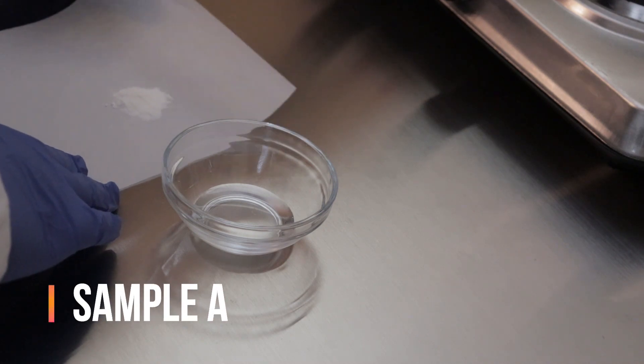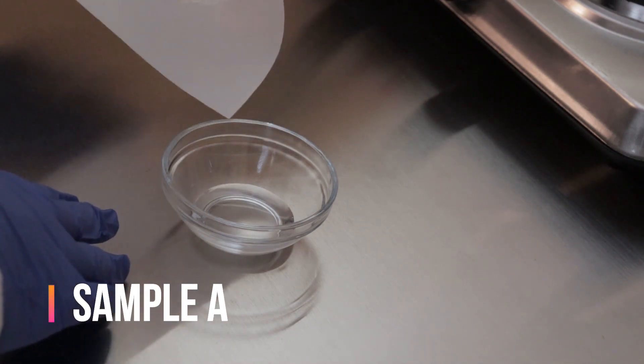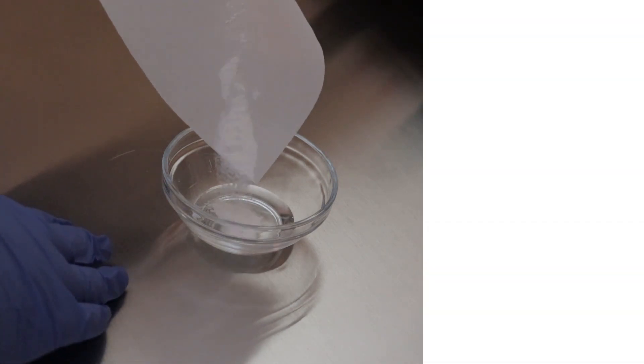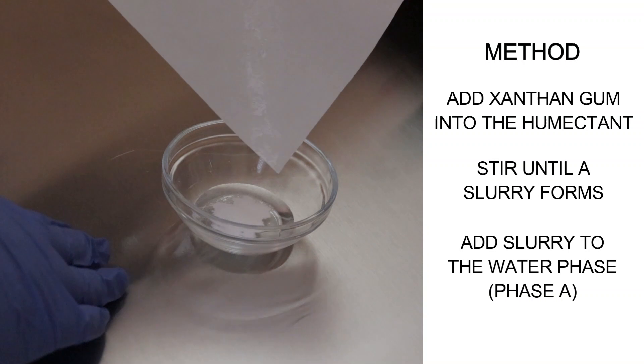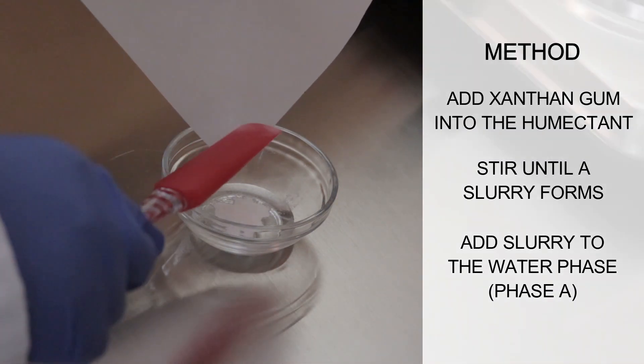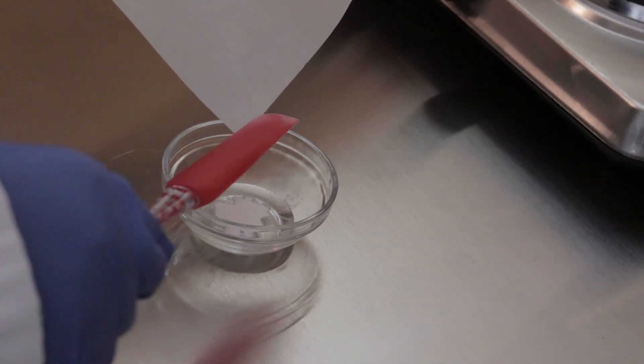Okay, so right now I am preparing sample A. The technique is to pour the xanthan gum into the glycerin. Stir it well until you start to see a slurry forms. And then once the slurry forms, then we'll add it into our water phase or phase A.